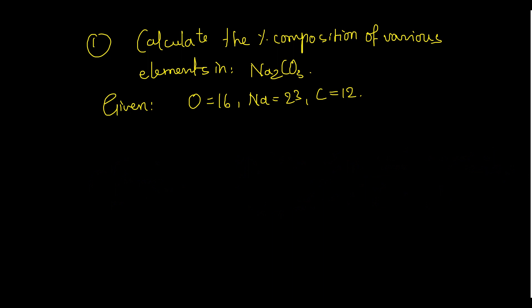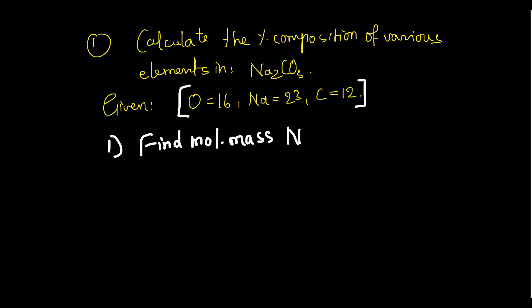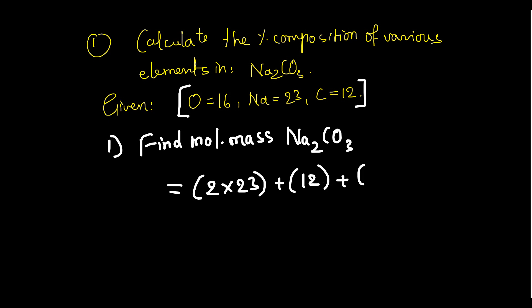Let's calculate the percentage composition of various elements in sodium carbonate (Na₂CO₃). Atomic masses given: oxygen 16, sodium 23, carbon 12. First, find the molecular mass of sodium carbonate. Count the number of atoms multiplied by their atomic mass: sodium has 2 atoms, so 2×23 = 46; carbon is 1×12 = 12; oxygen is 3×16 = 48.